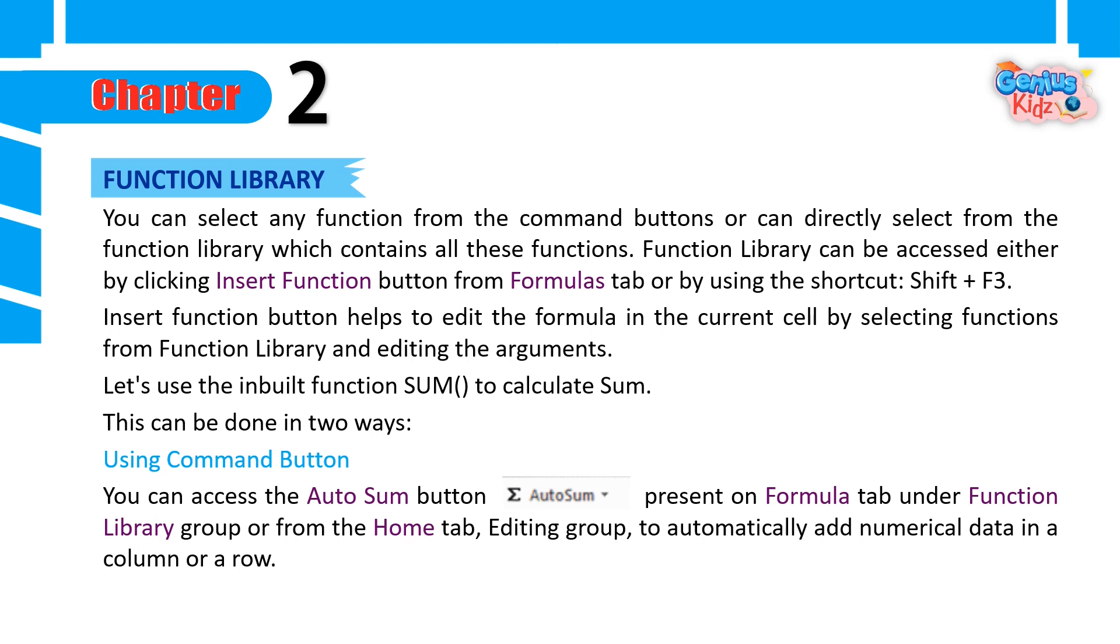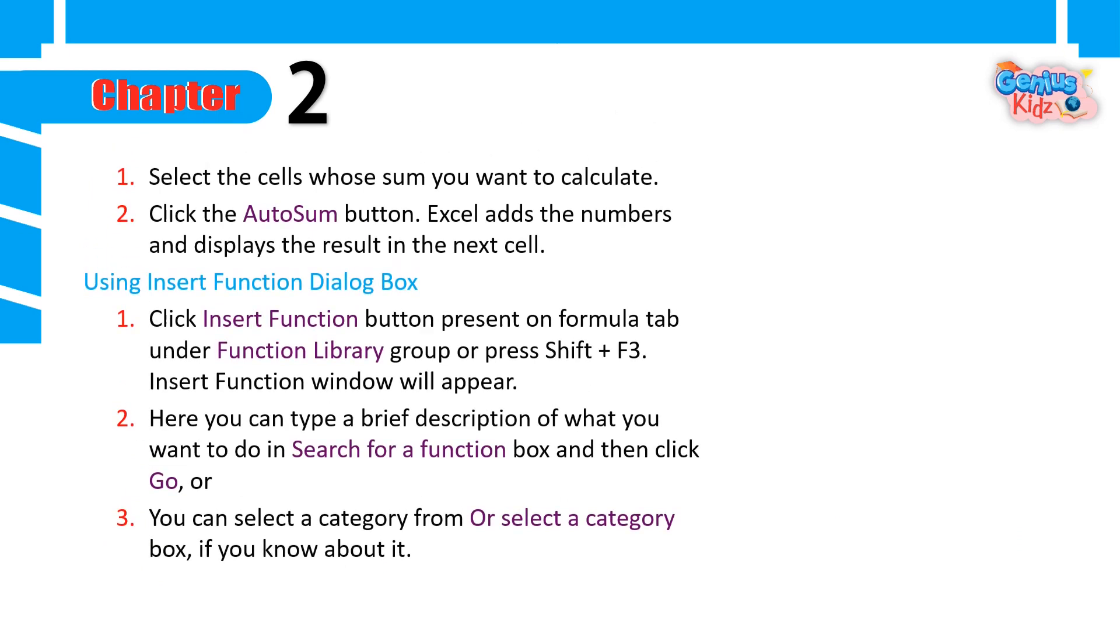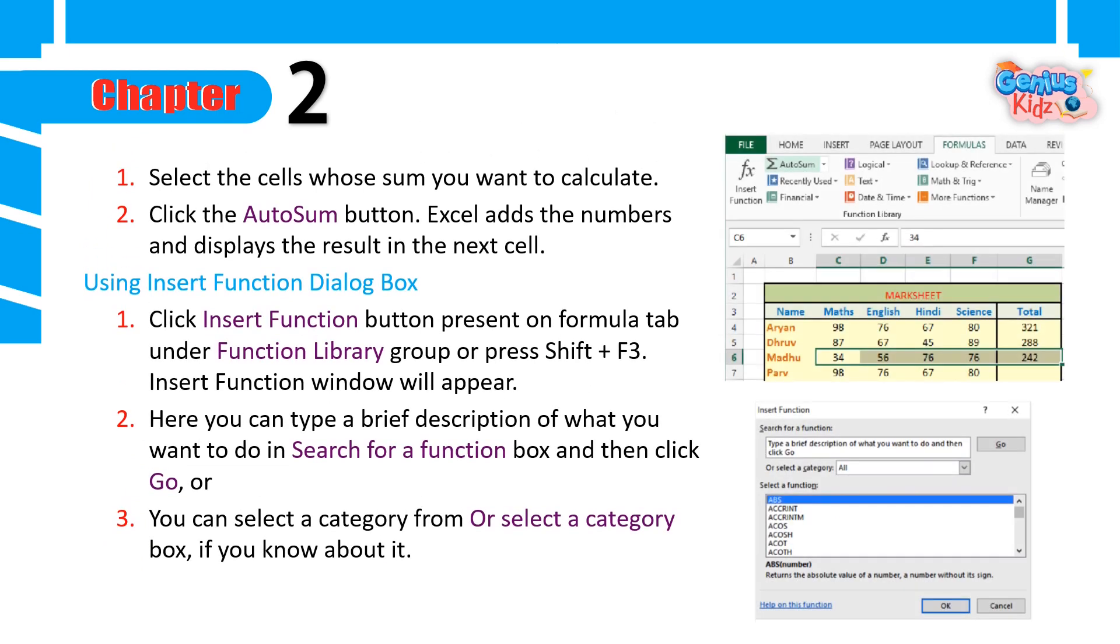Using Command Button: You can access the Autosum button present on Formula tab under Function Library group or from the Home tab, Editing group, to automatically add numerical data in a column or a row. Select the cells whose sum you want to calculate. Click the Autosum button. Excel adds the numbers and displays the result in the next cell.